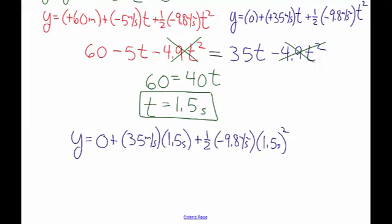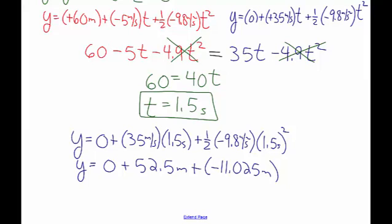And so taking this equation and solving it for the height, we get that the height is 0 plus 52.5 meters plus negative 11.025 meters, which if we work that out, we get that the height that they collide at is 41.475 meters.